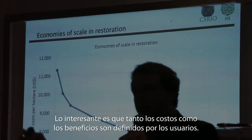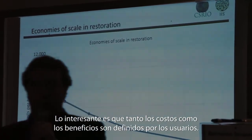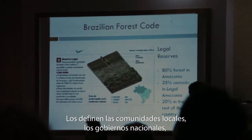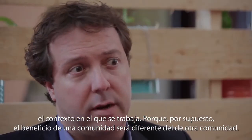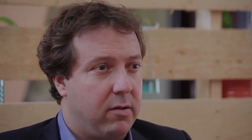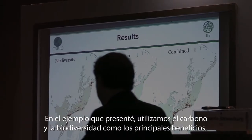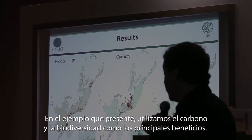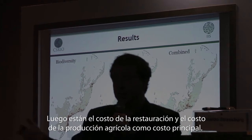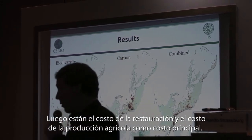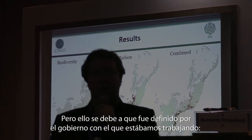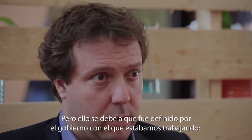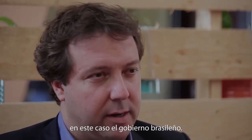The interesting aspect is that both cost and benefits are defined by the users — by the local communities, the national governments, the context you are working with. Because the benefit for you will be different from the benefit in another community. In the example I showed, we use carbon and biodiversity as the main benefits, and the cost of restoration and the cost of agricultural production as the main costs. That was defined by the government we were working with — the Brazilian government in that case.